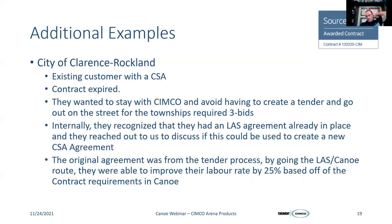Another example — and this one is interesting. In the city of Clarence Rockland near Ottawa, we had an existing customer with a contract service agreement. That contract was awarded traditionally through the tendering process, and Simcoe won. But Clarence Rockland was so pleased with the way we were servicing them that they didn't want to go back out to tender. They just wanted to keep going with Simcoe, but they didn't have a clause to extend it, and the contract expired. They didn't know what they wanted to do because they didn't want to go out for tender again.